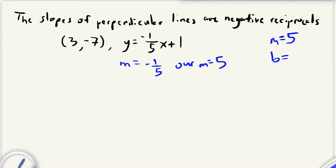Just like we did when we were writing the equation of parallel lines, once we have our slope, that's all we need. We can forget that this equation even exists. The slope of our line is going to be positive five. So now we just go back to our old friend, y equals mx plus b, slope intercept form.